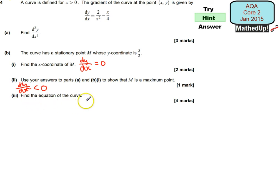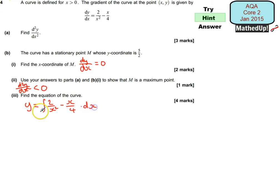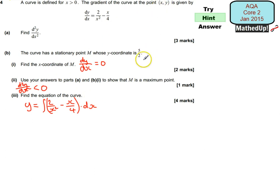For part 3, it says find the equation of the curve. Because we know what the gradient function is, we can work out what y is by integrating this with respect to x. Once we do this we're going to get a general solution for y, which will have a plus c in it. Then we know the x coordinate and the y coordinate for stationary point M, so we should be able to work out what c is and come up with the particular solution for the equation of the curve.